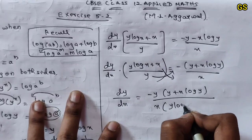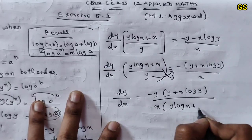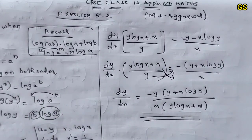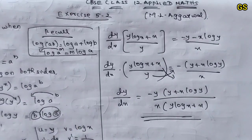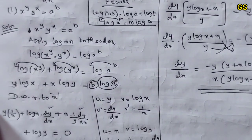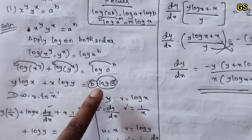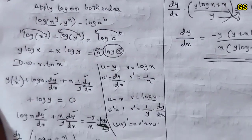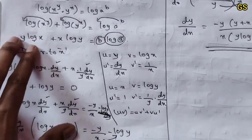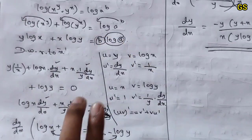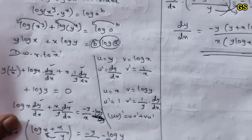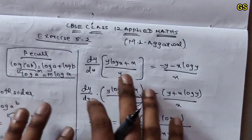This is dy/dx — that is the answer for sub-problem 1. It's straightforward: take the question, apply log on both sides, use the log property, apply the product rule, set the constant derivative to 0, and group dy/dx to the right side.